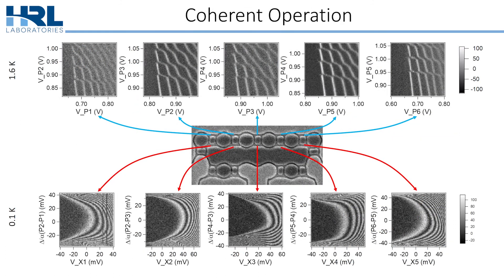Finally, I want to preview again that indeed these devices can be used for coherent control of electron spin. Here's a device where singlet-triplet exchange oscillations are shown for each of the five exchange axes. This is not a hero device — getting five functional exchange axes is common in these devices.